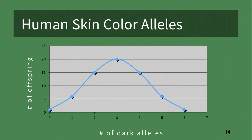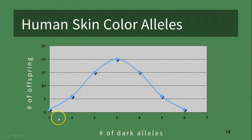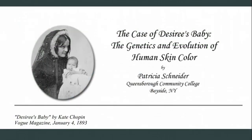In this bell-shaped curve, we can see that the most likely genotype for the offspring to inherit is the same genotype as the parents — three dominant alleles. They are less likely to have more dark alleles or more light alleles than either of their parents. We will explore some possible genotypes for each of these characters in the Desiree's Baby case study in class.